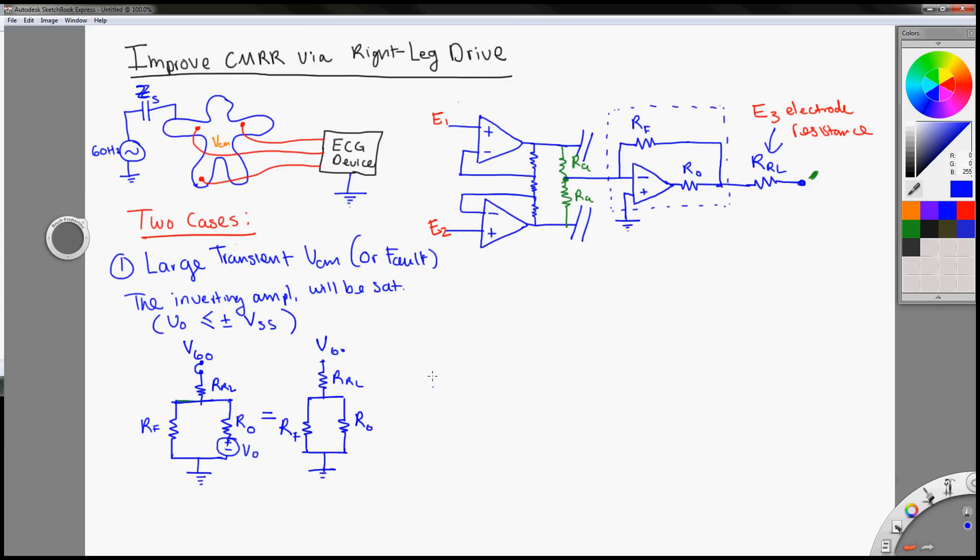So the equivalent, the equivalent resistance seen from the mains, or the 60 hertz is, our equivalent goes to R right leg, plus R feedback, parallel with R0. So you see how it's important that you,